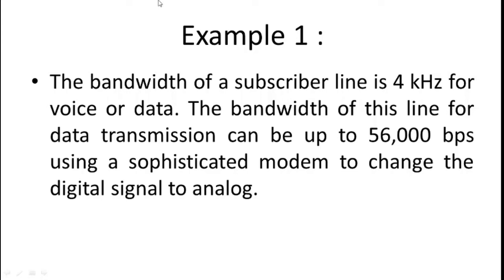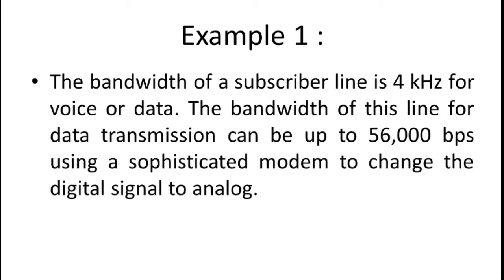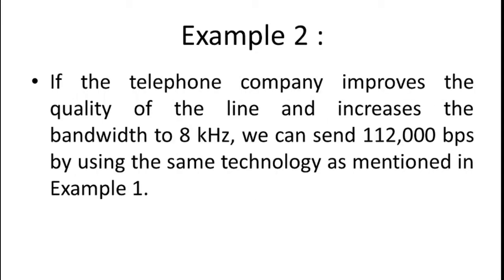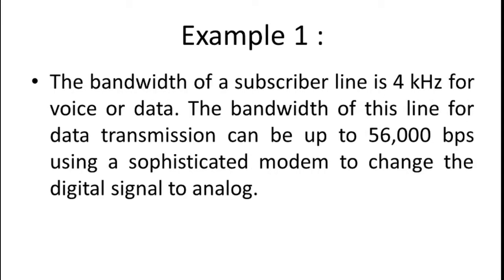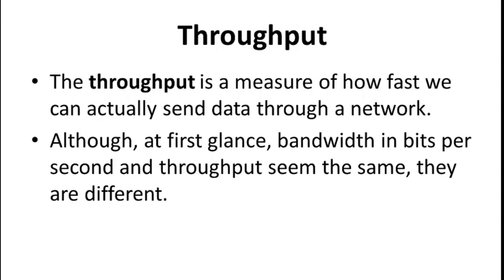Using a sophisticated modem to change the digital signal to analog, here we have used bandwidth in both contexts. Example two: if the telephone company improves the quality of the line and increases the bandwidth from four kilohertz to eight kilohertz, we can send 112,000 bps using the same technology as mentioned in example one. So the bits per second increases much more with the change in bandwidth frequency.